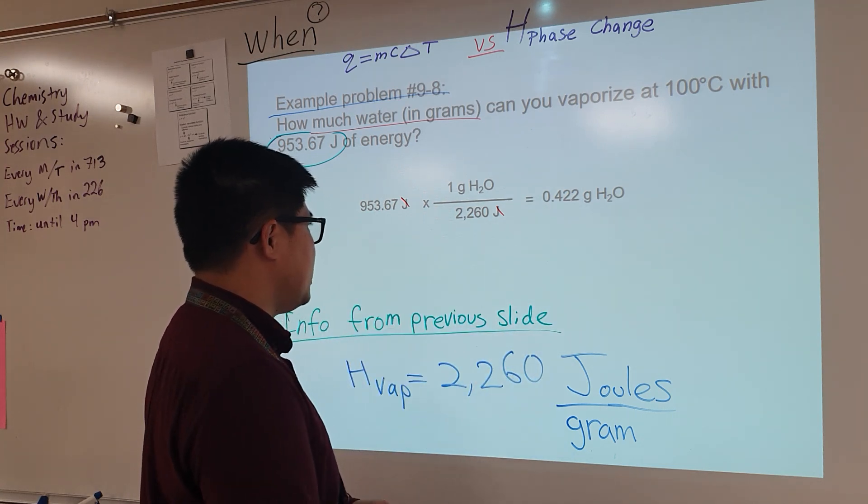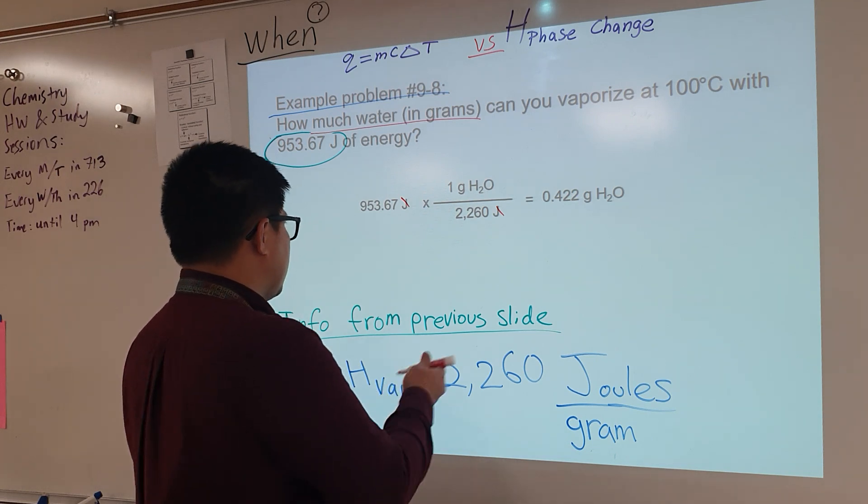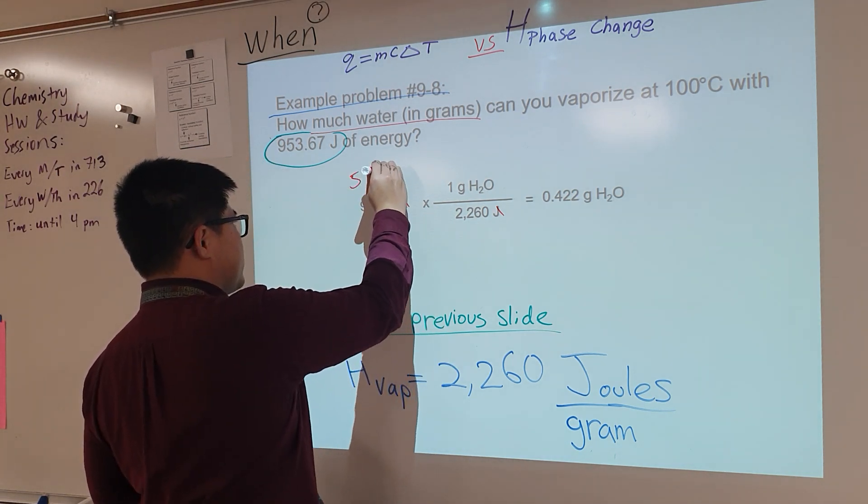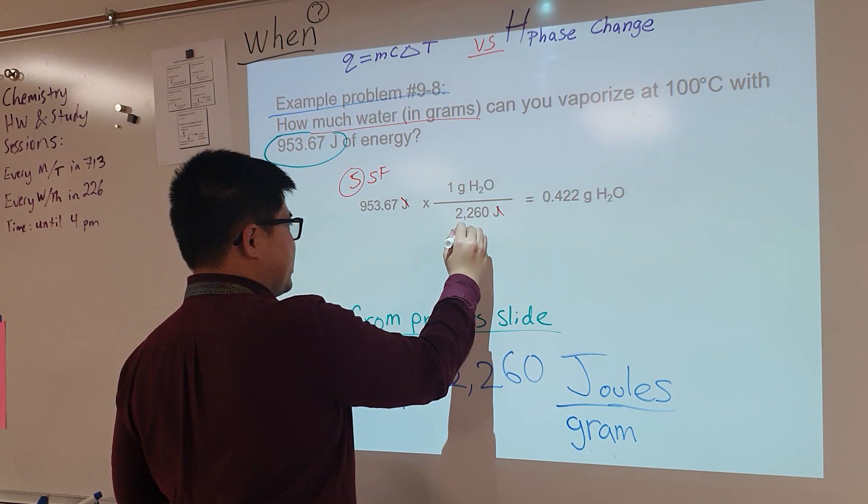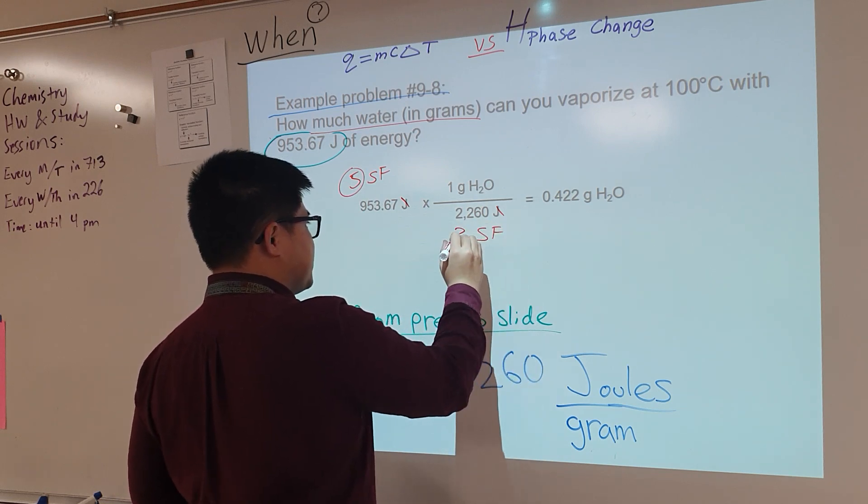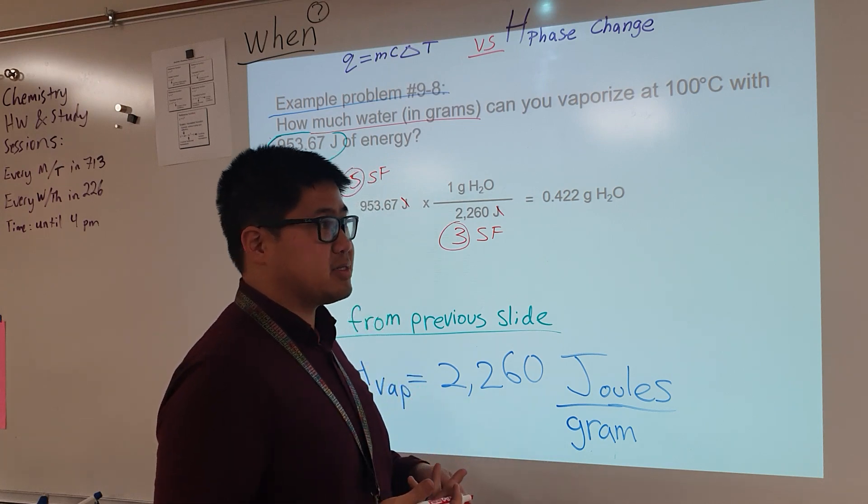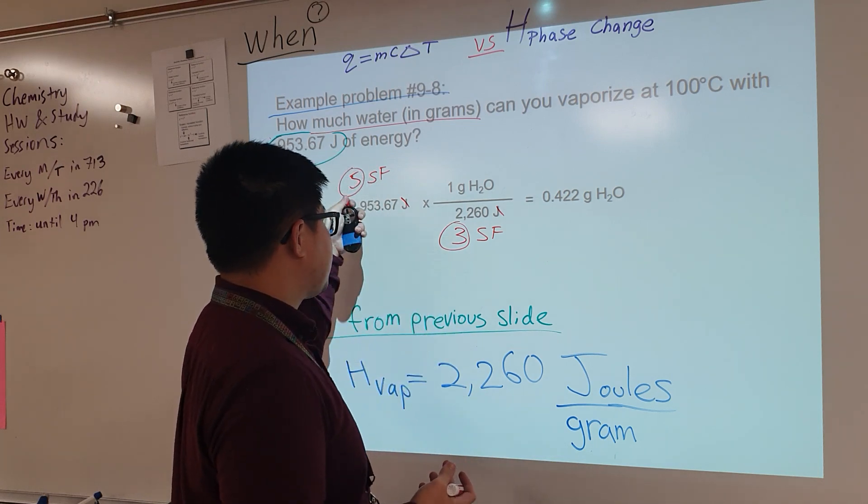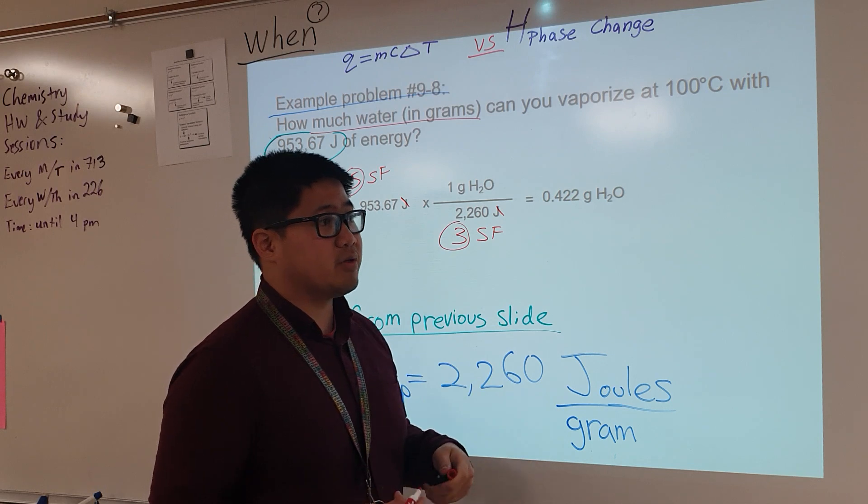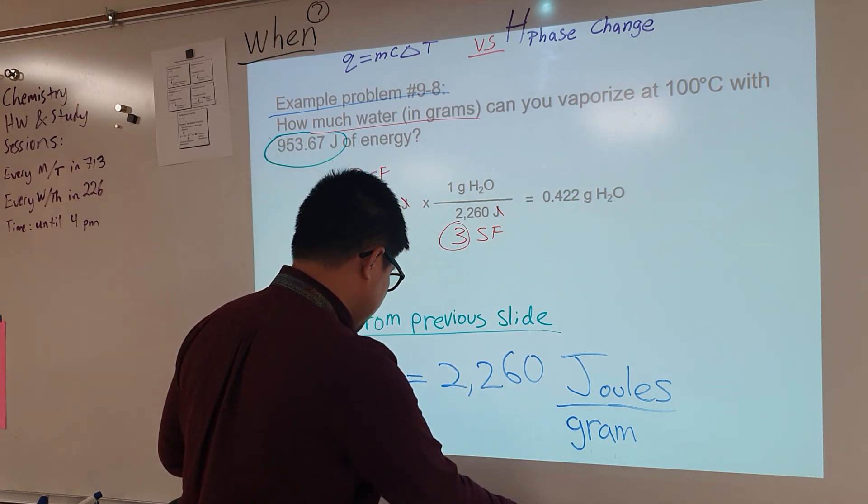There are five sig figs here, and there are three sig figs here. Just like unit six, when we do math, when we do multiplication, we look at the number with the least amount of sig figs. Three sig figs compared to five, our answer should have three sig figs. And that's pretty much it, ladies and gentlemen.